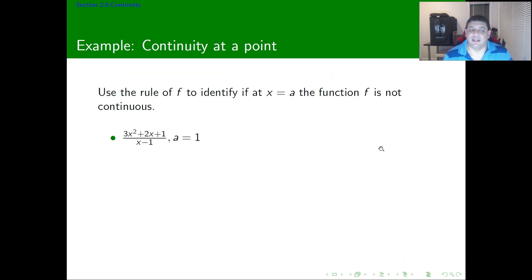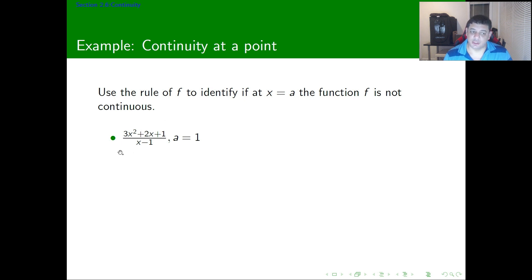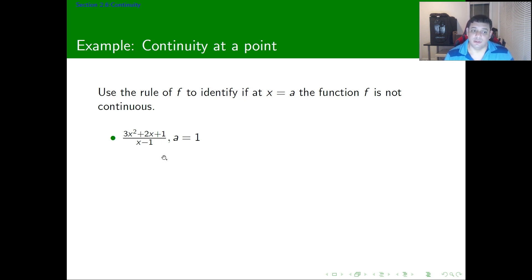Now let's analyze continuity from the point of view of a function with a rule. Assume we have the function (3x² + 2x + 1) / (x − 1), and we want to check if it's continuous at a equals 1. We immediately know it's not going to be continuous because there is a problem in the domain at 1. This is either going to be a hole or an asymptote — likely an asymptote — so there's no continuity there.